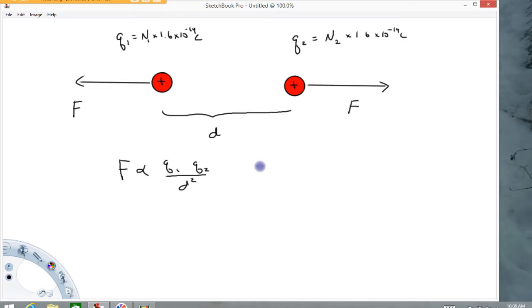So if I write this in equation form, it looks like this. F equals some constant, which I'm just going to call k for the moment, times q1 times q2 over distance squared. And again, this is an experimentally determined law.